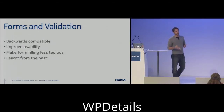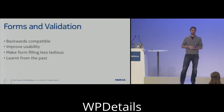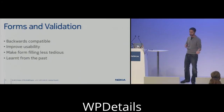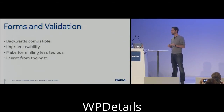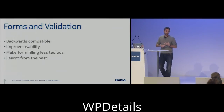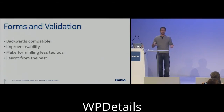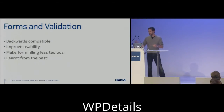Some of the things that have been added were picked up from the WAP specification, like the ability to force the user to enter a phone number or an email address. Other things are more modern and have been added now, like progress, the ability to define a range, and to move up and down values.